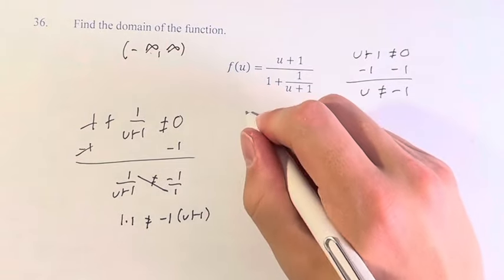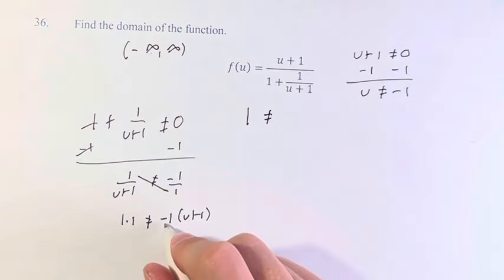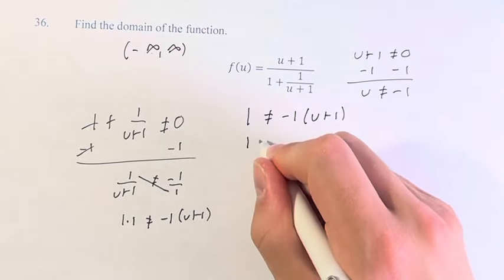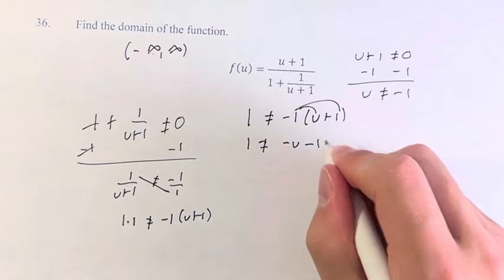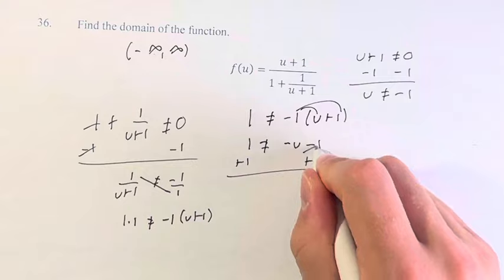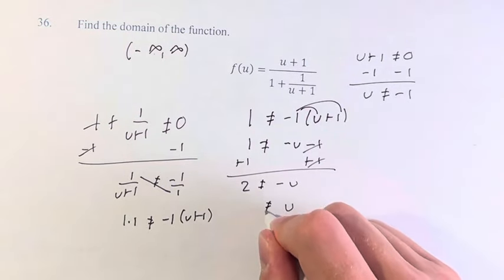Rewriting this, 1 × 1 = 1 ≠ -1 times (u+1). So 1 ≠ -u - 1. Simplifying, the ones cancel, giving -u ≠ 2. Therefore, u cannot equal negative 2.